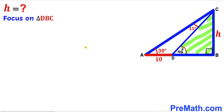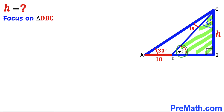Now let's focus on right triangle DBC. We know this angle is 90 degrees and this angle is 45 degrees. Since the sum of three interior angles in a triangle is always 180 degrees, this remaining angle must also be 45 degrees. Since both non-right angles are 45 degrees, triangle DBC is an isosceles triangle, meaning side BC equals side BD.